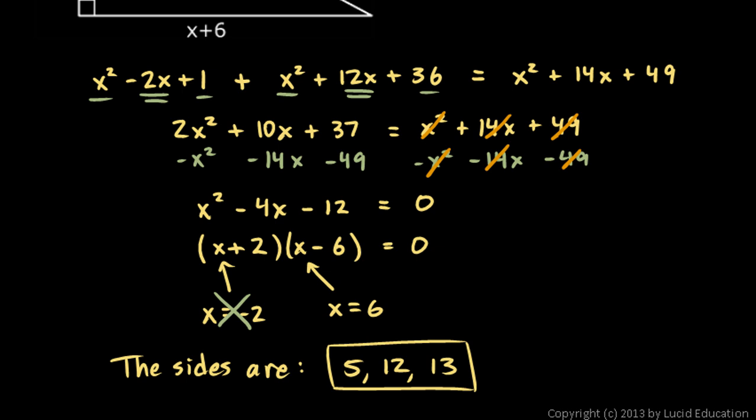And that, of course, would be the way to check, or one way to check this answer. This was a right triangle. The Pythagorean theorem, of course, applies here. That's how we solved it. So these sides should work with the Pythagorean theorem. And you can plug those in. 5 squared plus 12 squared does, in fact, come out to be 13 squared.